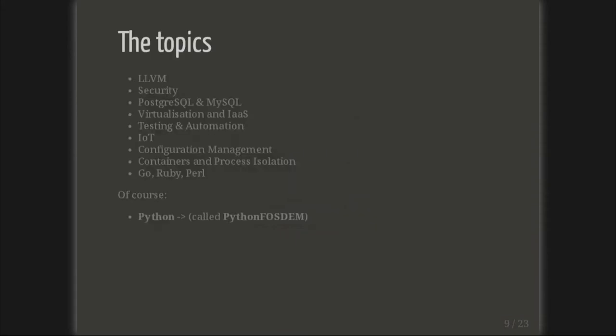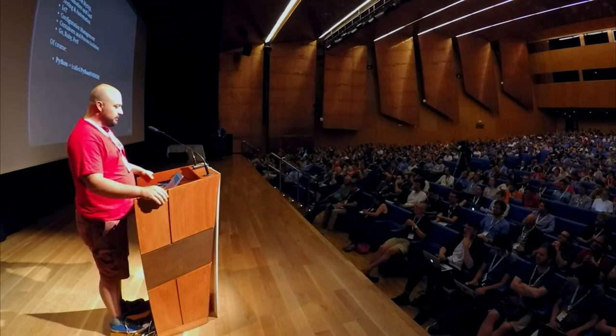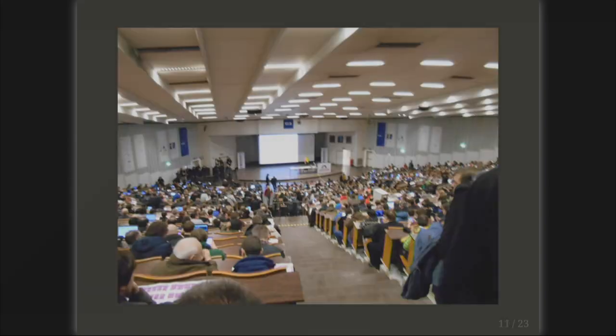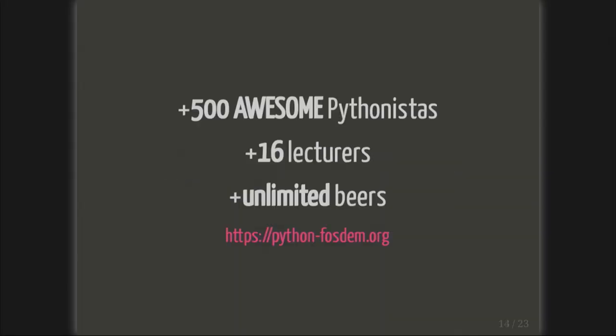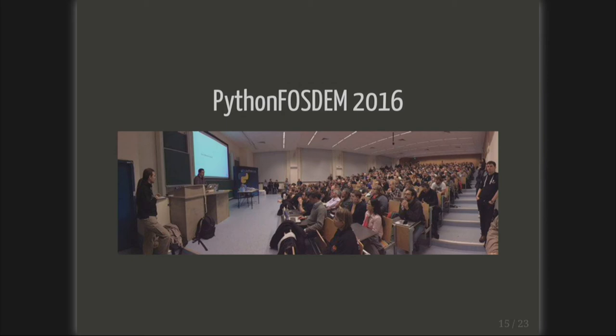You can find topics like LLVM, security, PostgreSQL, MySQL, virtualization with Xen, Docker, testing, IoT, configuration, containers, Go, Ruby, and Perl. And of course there is a Python dev room. If you don't know FOSDEM, it's like this: 1,000 people in the same room — and that's not even the bigger room. Welcome to Python FOSDEM 2017. Last year we received 500 awesome Pythonistas, 16 lecturers, and of course unlimited beers. That's the room of Python FOSDEM. At the beginning we received 80 people; last year with the success we received 400 to 500 people in the same room. Thank you.